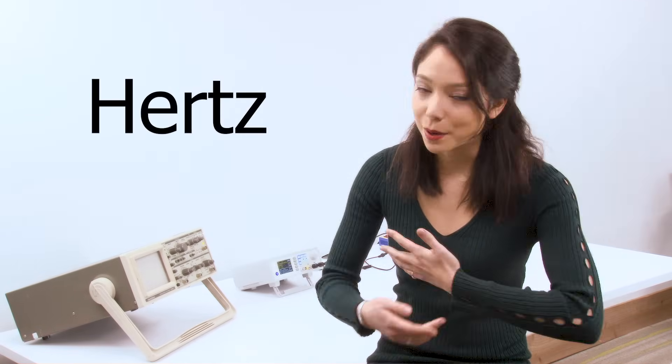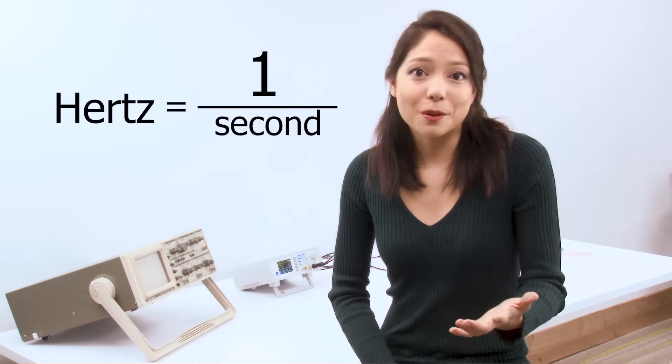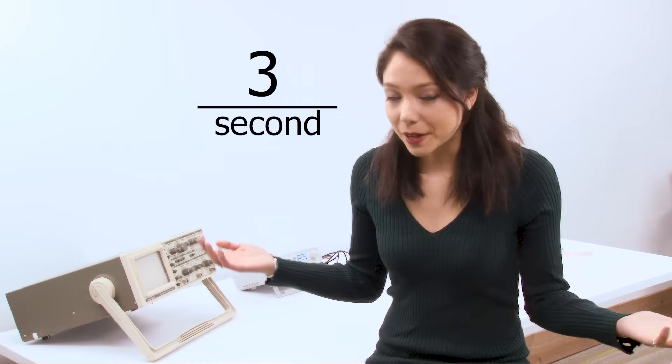To make things easy, it's most common to use the standard unit hertz, hence my bad puns, to describe frequency. Hertz are nice because they're defined as one per second. So if I jump on a bed three times in one second, I jumped at three hertz.